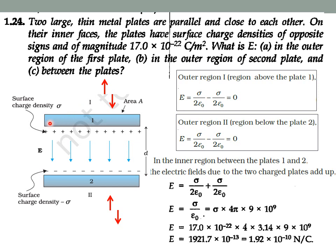In this problem there are two metal plates, plate 1 and plate 2. The inner surface of plate 1 has a positive charge distribution with surface charge density +σ, and the inner surface of plate 2 has a negative charge distribution with surface charge density −σ. We need to find the electric field in the outer region of plate 1, the outer region of plate 2, and the region in between the plates. This kind of setup is called a parallel plate capacitor, which we will also study in chapter 2.